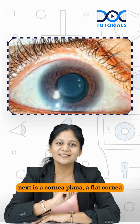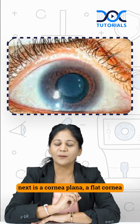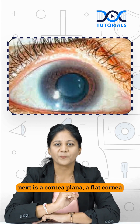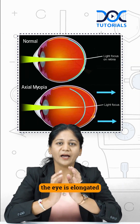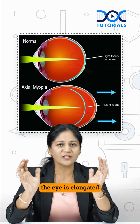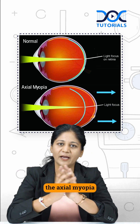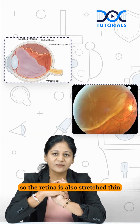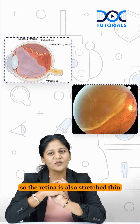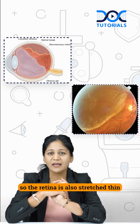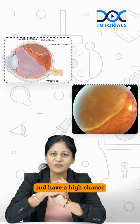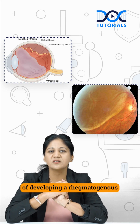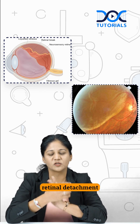Next is cornea plana — a flat cornea. The eye is also elongated, causing axial myopia. As a result, the retina is stretched thin and there is a high chance of developing a rhegmatogenous retinal detachment.